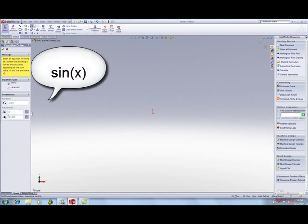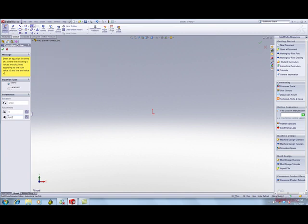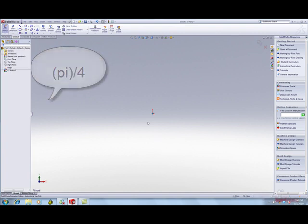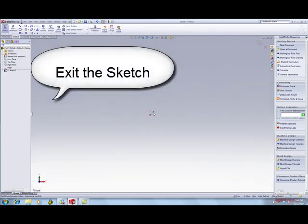For the first curve, enter sine x. For x1 enter 0. For x2 enter pi divided by 4. Be certain to put pi in parentheses to define pi. Press the F key to fit the graph.